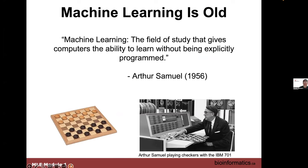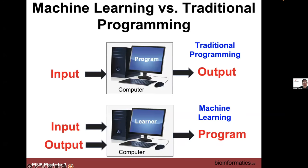Samuel was working on checkers as an example of AI and ML techniques. Interestingly, the checkers problem was solved about 20 years ago here at the University of Alberta — so from 1956 to roughly 1996, that's how long it took to solve checkers.